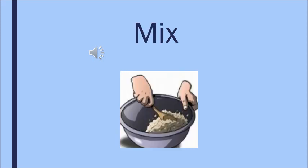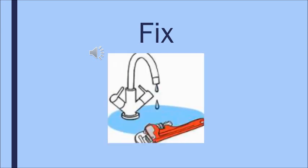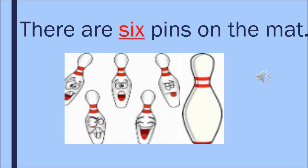Next is M — sound of M is M, and X — M, X, mix. Can you see the person? He is mixing something. So M, X, mix. And then we have the next one. A tap is leaking, and there is a tool also that may be used to fix it. So it is F — sound of F is F, and X — F, X, fix. Now let's see a few sentences with them.